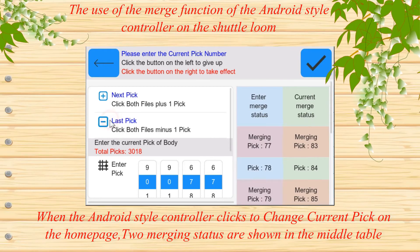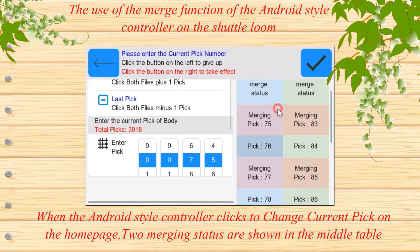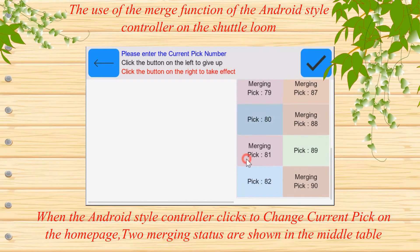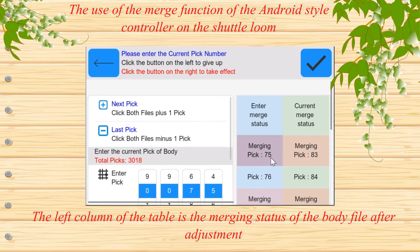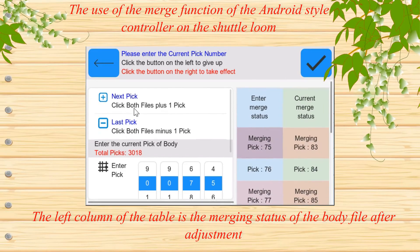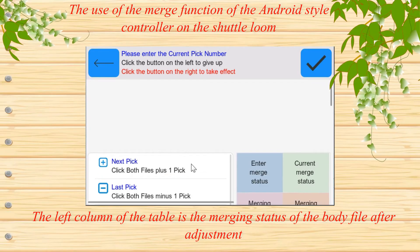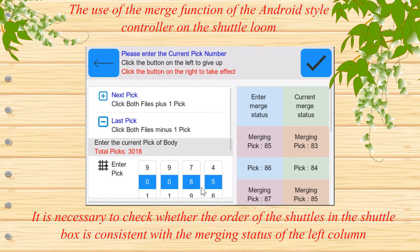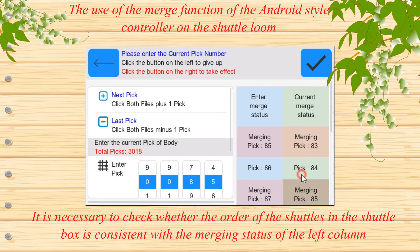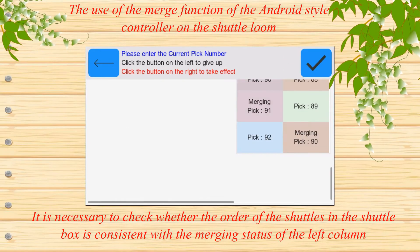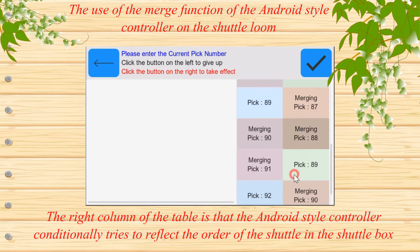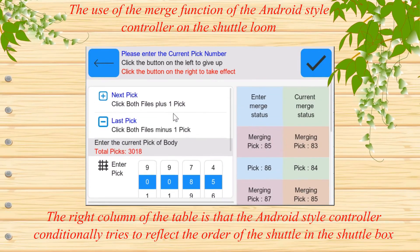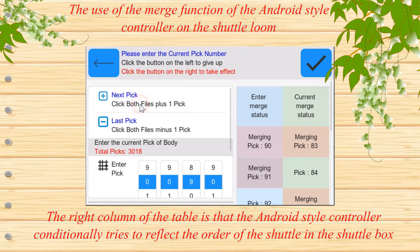When the Android-style controller clicks to change the current pick on the home page, two merging statuses are shown in a middle table. The left column of the table is the merging status of the body file after adjustment. It is necessary to check whether the order of the shuttles in the shuttle box is consistent with the merging status shown in the left column. The right column conditionally tries to reflect the order of the shuttle in the shuttle box.